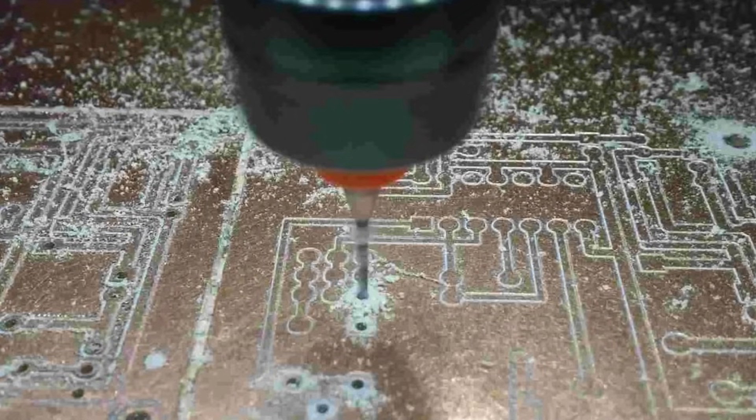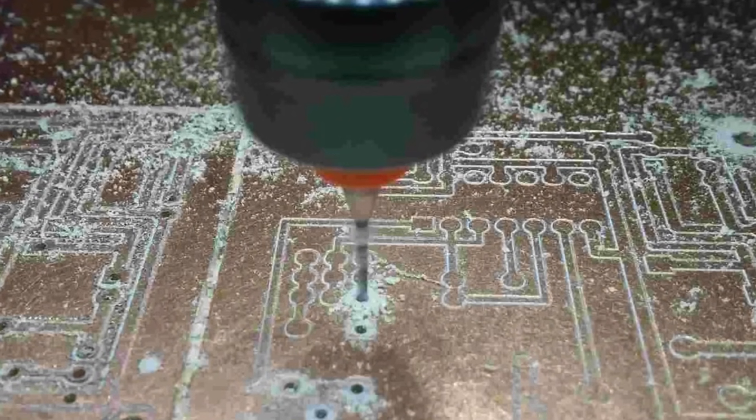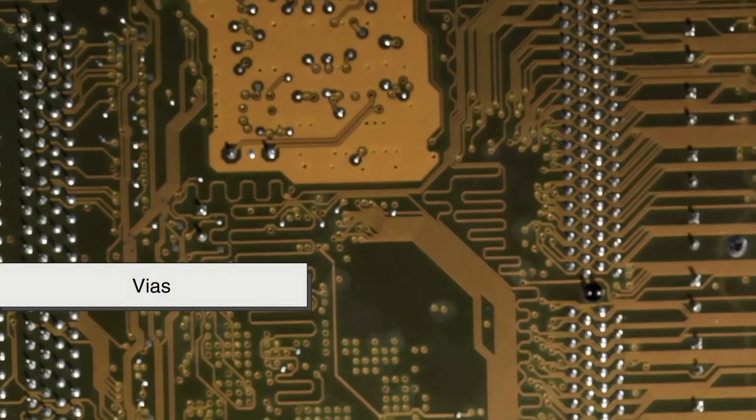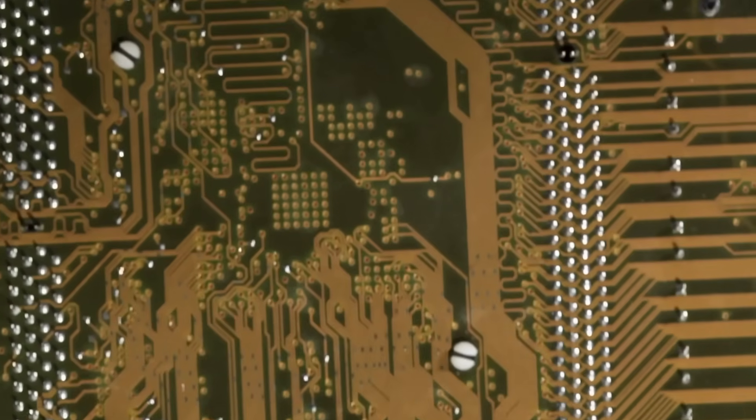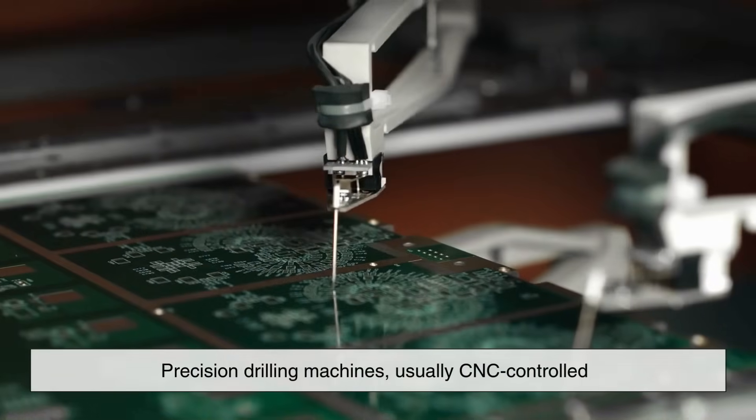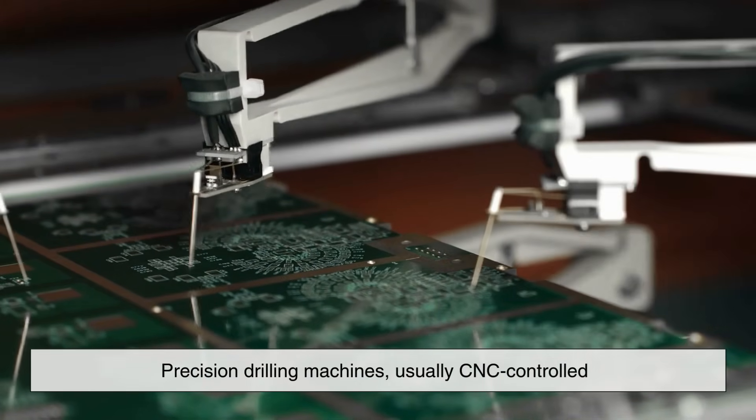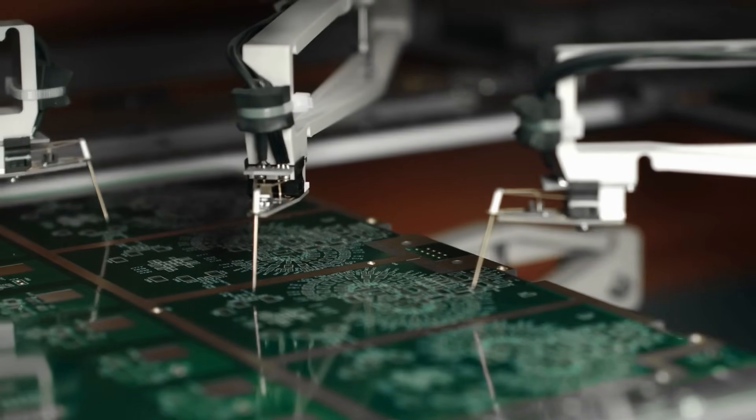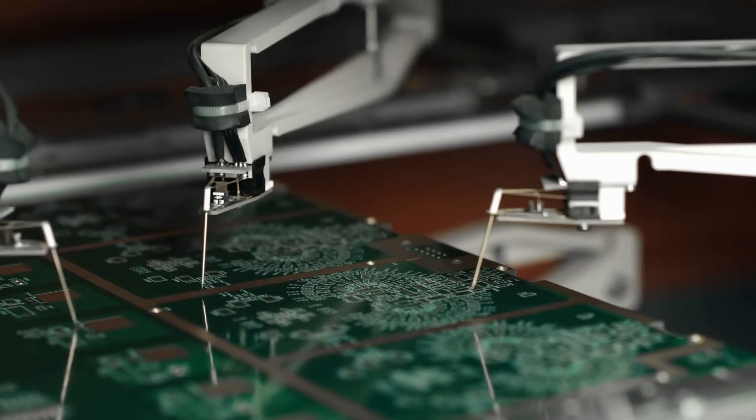Now that the traces are defined, the next crucial step is drilling holes in the board. These holes, called vias, will later allow components to be mounted and electrical connections to pass between layers. Precision drilling machines, usually CNC-controlled, are used to drill holes as small as a fraction of a millimeter in diameter.